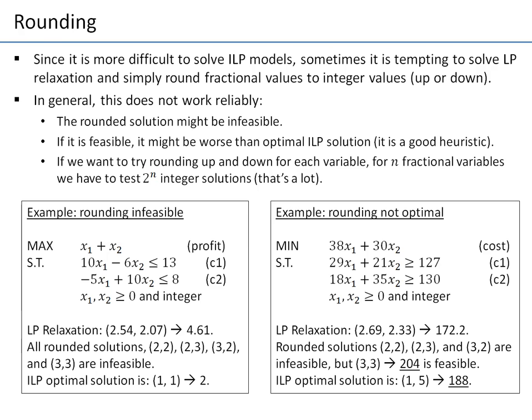Because integer linear programming models are more difficult — sometimes much more difficult — than linear programming models, it is sometimes tempting to solve just the LP relaxation of an integer model and simply round fractional values to integer values, either up or down. This is a practical idea, but I want to warn you that it does not always work.